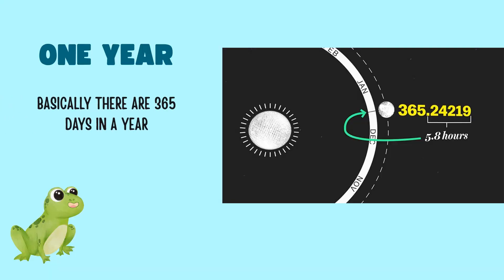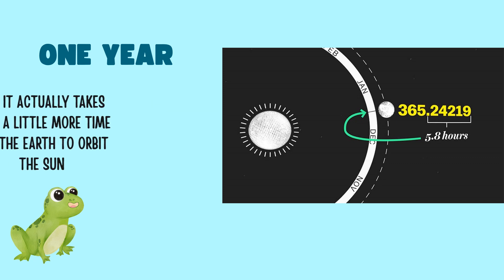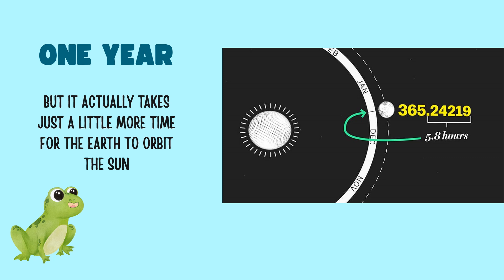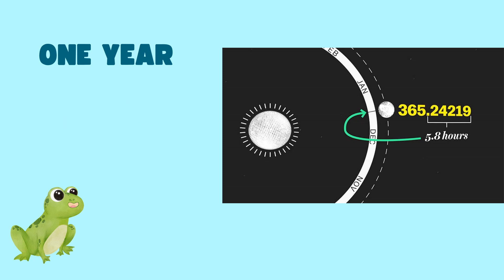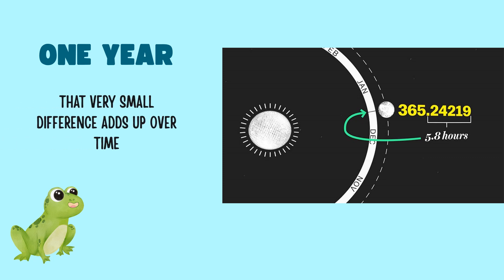Basically, there are 365 days in our calendar year. But it actually takes just a little bit more time than that for the Earth to orbit around the Sun — precisely, 365.24219 days. That's not a big difference, but over time, that very small difference adds up.